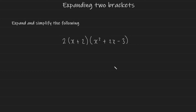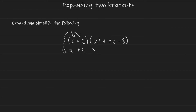Let's take a look at this final example here. We have two brackets being multiplied together and a constant on the outside of the first bracket. The first thing to do here would be to take this constant, this 2 on the outside, and multiply it into the first bracket. This will give us 2x plus 4. Now you can go ahead and put brackets around this because it still has to be multiplied onto the bracket to the right. And how you would now expand this is as we've done in the previous examples.